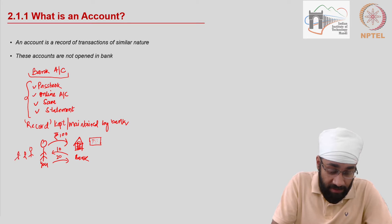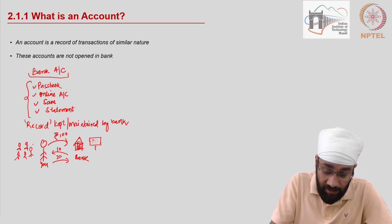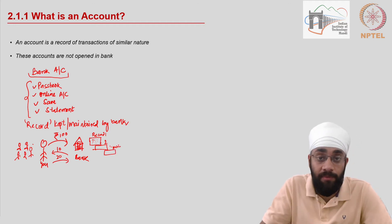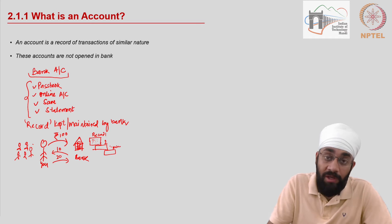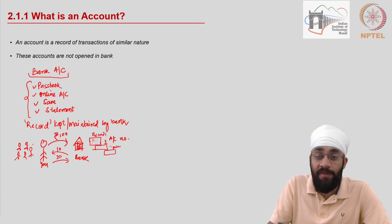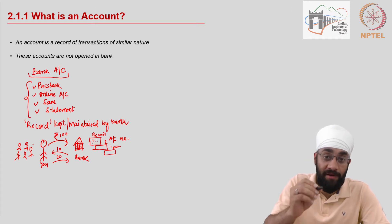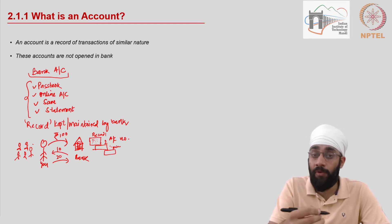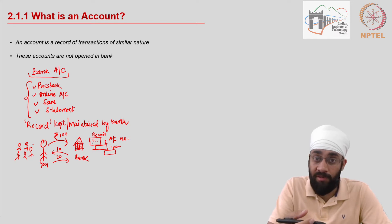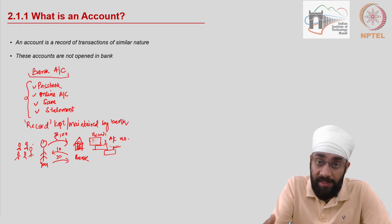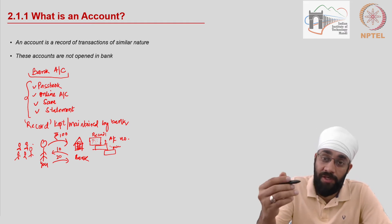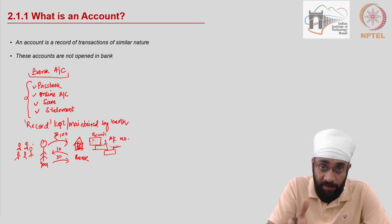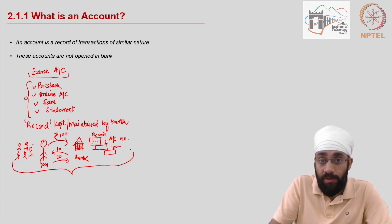You are not the only person doing that — there are lakhs and crores of people who go to the bank. So the bank creates separate records: record one, record two, thousands and lakhs of records. Each account is given a unique number called an account number, so the bank can uniquely identify you as an account holder and pull up your record when needed.